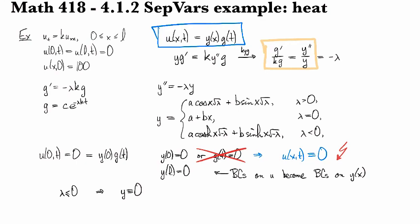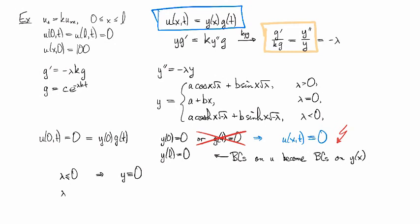If we take lambda to be equal to zero, similarly, we get nothing. So the only thing left is for lambda to be positive.